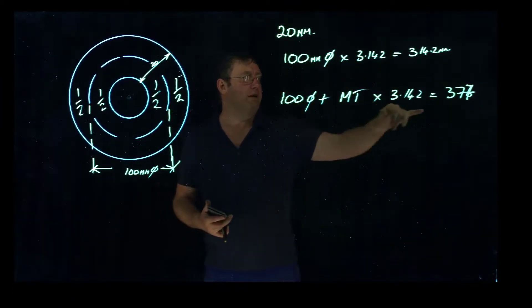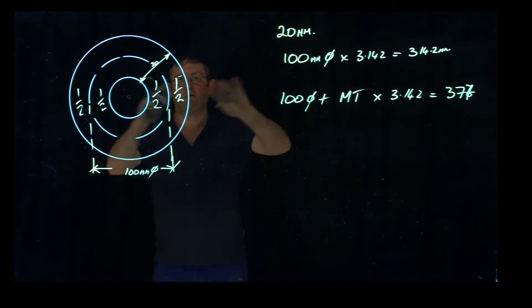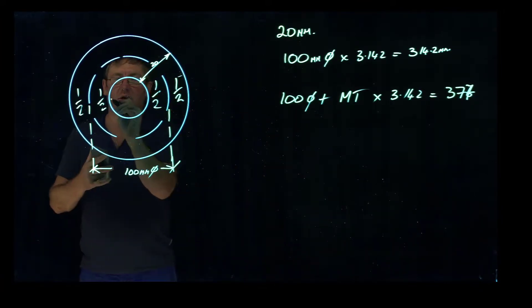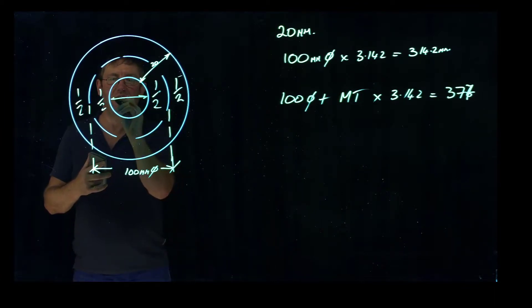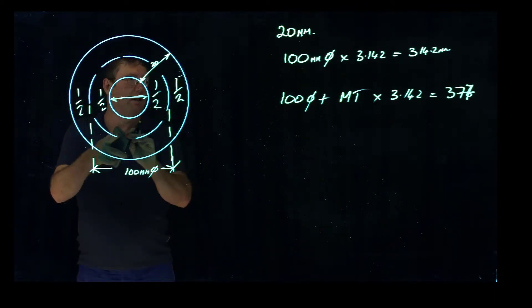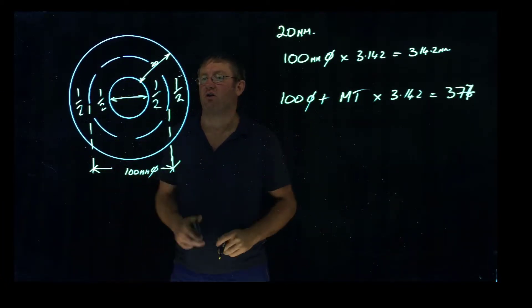So if I went and cut a piece of steel at 377 and rolled it up, I would find it's now 100mm in at this point here. It's 120 around here, and that's what I had to times it by to get that size.